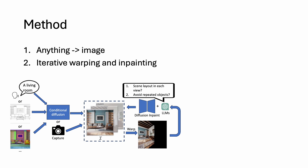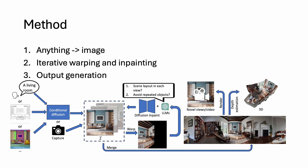The inpainting step leverages pre-trained diffusion inpainting models to complete the missing pixels. To ensure the coherence of the scene layout, we leverage pre-trained language models to control what to generate in each view. Finally, our method merges multiple perspective views into the final panorama. Smooth fusion and super-resolution are proposed to ensure the quality and resolution of the panorama. Since both the diffusion and language models are pre-trained without fine-tuning, our method can effectively preserve the zero-shot performance.